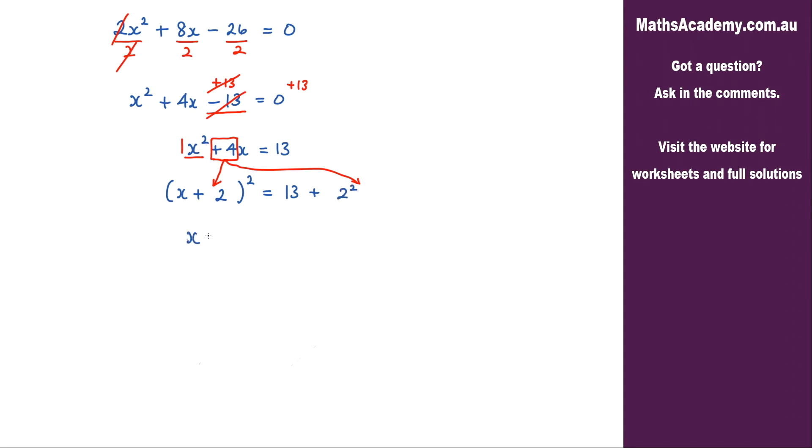So what I've got so far is (x + 2)² = 13 + 2². 2 squared is 4. 13 and 4, that is 17.